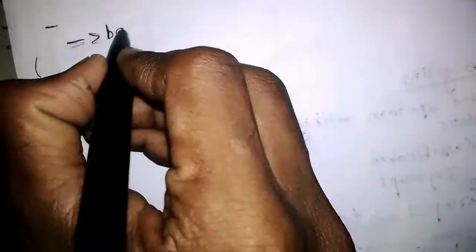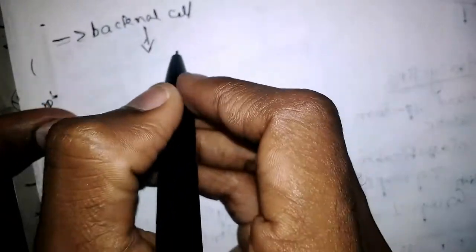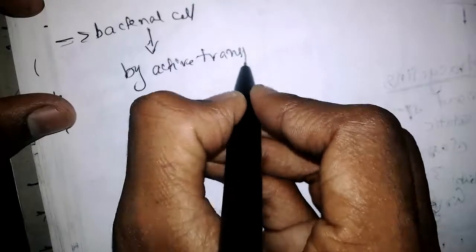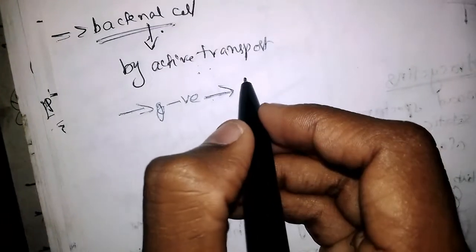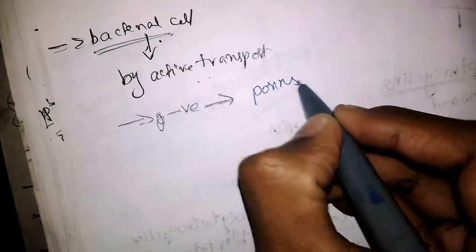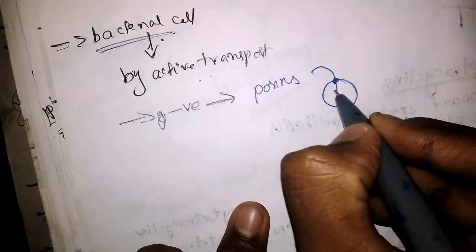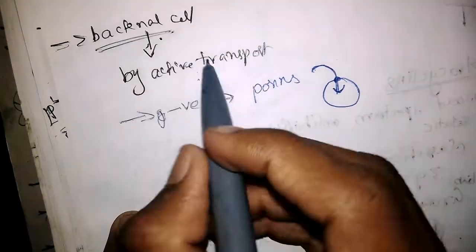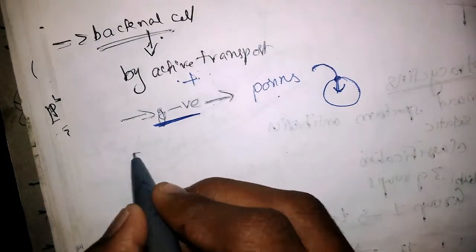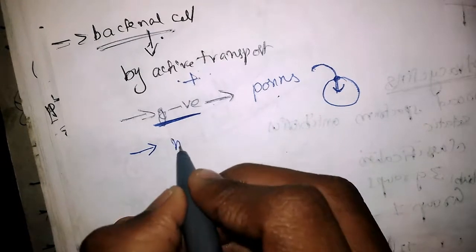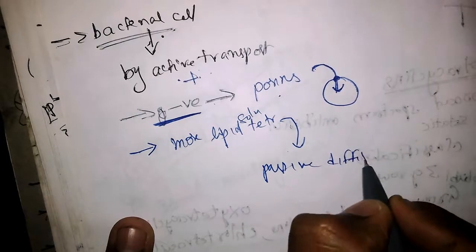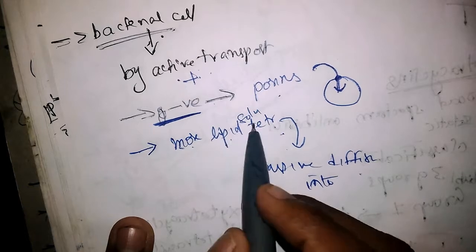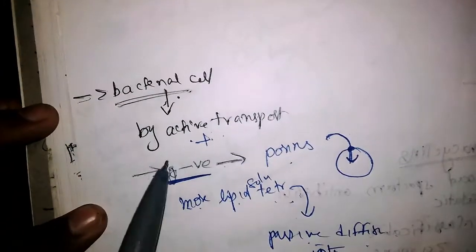Before discussing mechanism further, let us see how tetracyclines enter into bacterial cells. Tetracyclines are transported into the bacterial cell by active transport. In gram-negative bacteria there are porins, and tetracyclines diffuse into the cell through these porins. In gram-negative bacteria both active transport and porins are involved. More lipid-soluble tetracyclines diffuse passively into the bacterial cell.